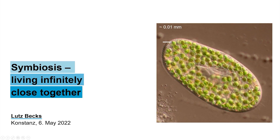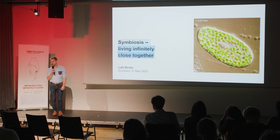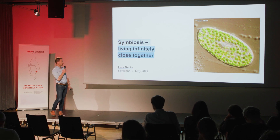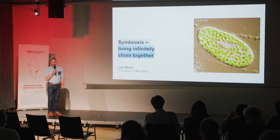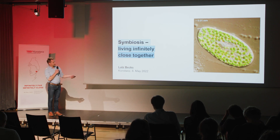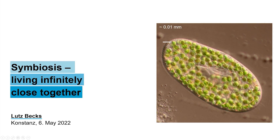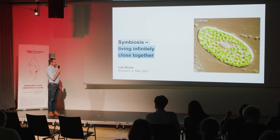On this picture, we have two species. We have a large cell — a ciliate called Paramecium bozaria. Ciliates are unicellular organisms you find in every water habitat. And some of these ciliates live in a really close relationship with green algae. In this picture, the ciliate is filled up with green algae — all the small green cells you see here are green algae.